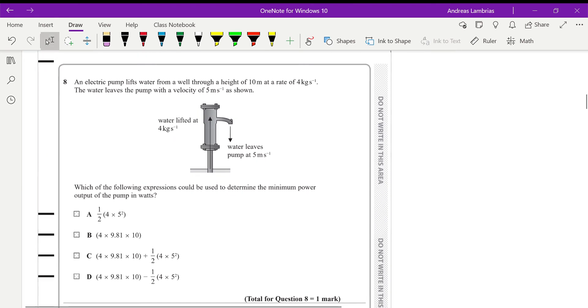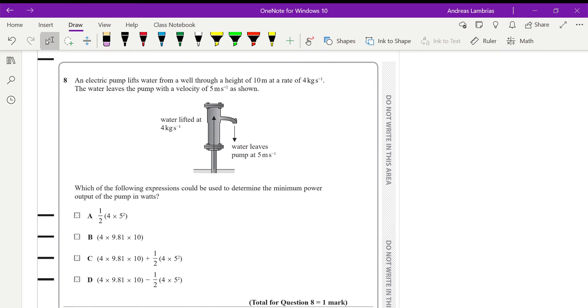Then moving on to the next question. You have this electric pump that lifts water from a well through a height of 10 meters at a rate of 4 kilograms per second. The water leaves the pump with a velocity of 5 meters per second and we need to find an expression that can be used to determine the minimum power output of the pump in watts. So a reminder that the power is the energy per time.